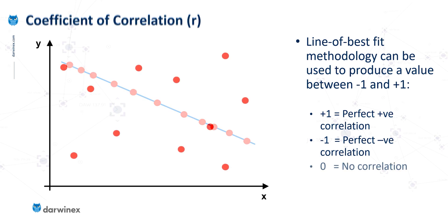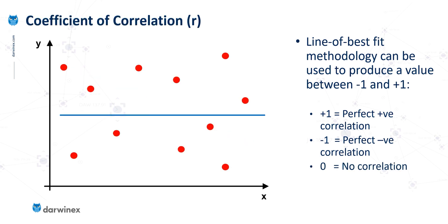If there is simply no relationship between the two variables at all, then we'd get a value of 0. And in its most simplistic form, this is what we will use in order to ascertain the correlation between the assets in our portfolio.